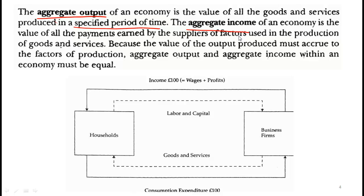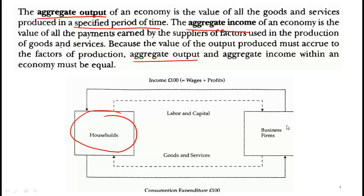For example, the labor that is provided — you provide labor to firms and for that you receive an income — is included in the aggregate income. This is critical: the value of the output produced must accrue to the factors of production. Aggregate output and aggregate income within an economy must be equal.